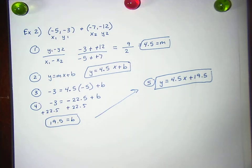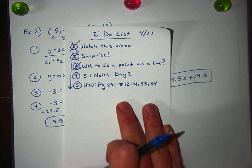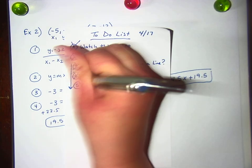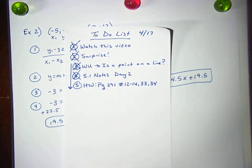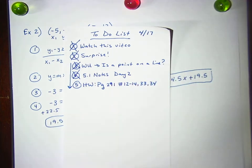So all right, hopefully this wasn't too rough for you. Let's see. Here's my to-do list. So we're done with the notes for the day. That's awesome. All right, your homework is page 291, numbers 12 through 14, and 33 and 34.